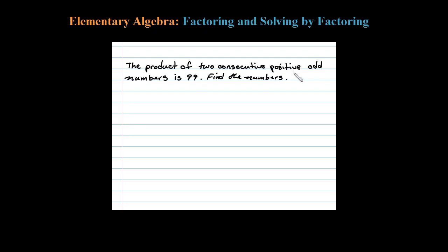The product of two consecutive positive odd numbers is 99, find the numbers. Well, the first thing we want to do is identify a variable, so let x equal...